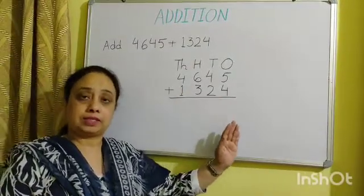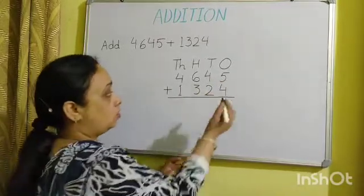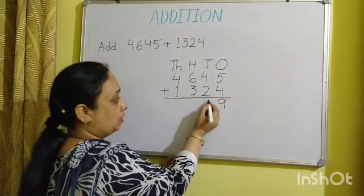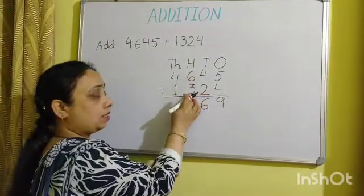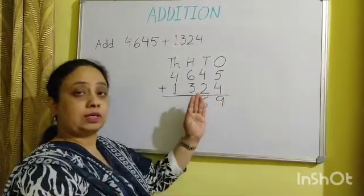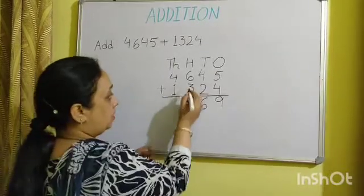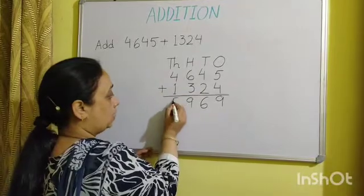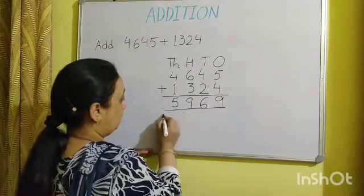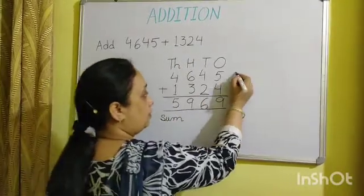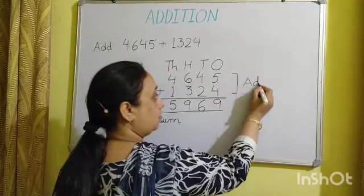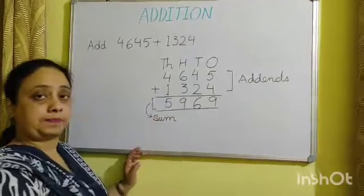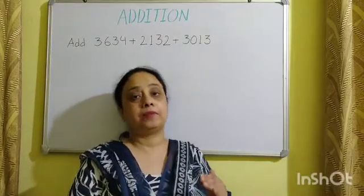We will start addition from the rightmost place, that is the ones place. 5 plus 4 is 9, so we place 9 here. 4 plus 2 is 6. Next we add the hundreds place: 6 plus 3 is 9. Then moving to the left we add the thousands: 4 plus 1 is 5. This is the sum. As I told you, the numbers which are added are the addends and the result is known as the sum.